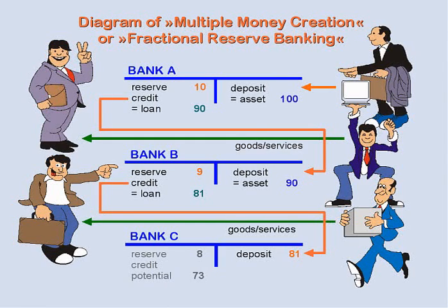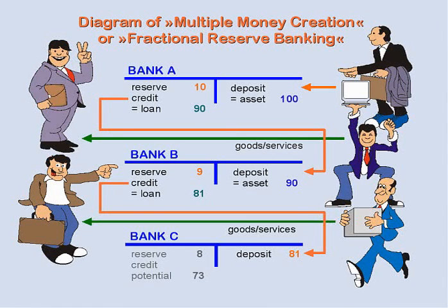Now let's have a look at the whole situation again. The original deposit of 100 monetary units can still be found in the banking system as reserves in Bank A and Bank B, plus the deposit in Bank C — the orange figures. Adding these up results in exactly the original amount of 100 monetary units, and not a single cent of money had been created. The additional figures in the bank accounts are credits — that is, not money.